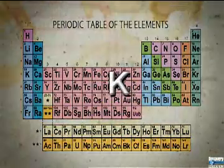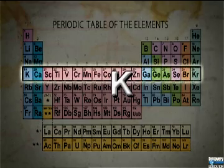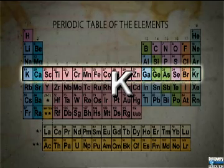Potassium is classified as an alkali metal. It lies in the periodic table's fourth row, period 4.